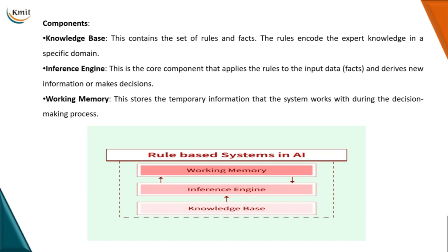The knowledge base basically contains the set of rules and facts. These rules are encoded by expert knowledge in a specific domain. At the heart of rule-based systems lies this comprehensive set of rules, which constitute the knowledge base and provide detailed guidelines the system should follow. The next core component is the inference engine. Rule-based systems are armed with an inference engine tasked with applying the rules from the knowledge base to the given data, applying logical conclusions based on those rules. The entire decision-making process happens in the inference engine.